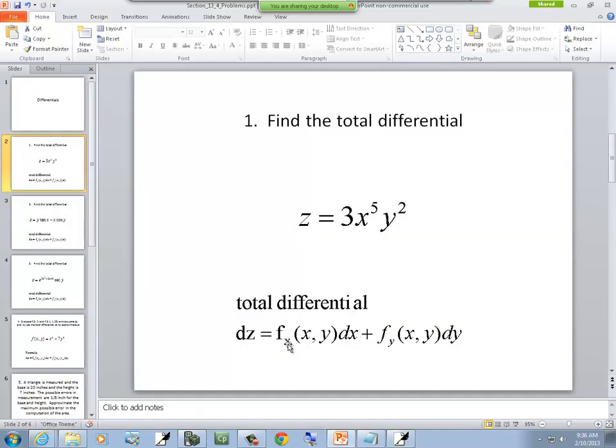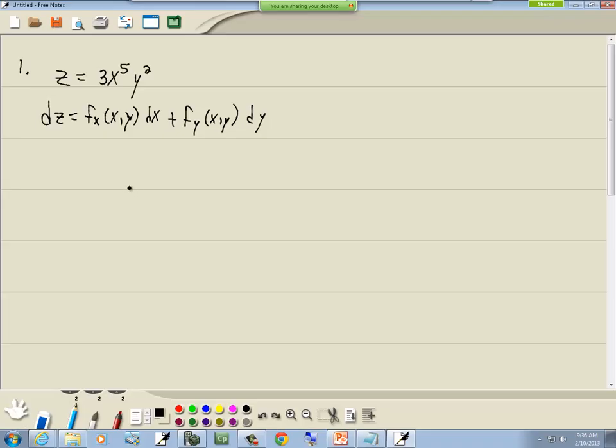It's pretty straightforward - partial with respect to x and then you multiply it times dx. If I take the partial with respect to x of this, we treat 3 and the y squared like constants so they just stay there and we take the derivative of x to the 5th. So we'll have 3y squared times 5x to the 4th dx.